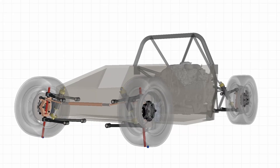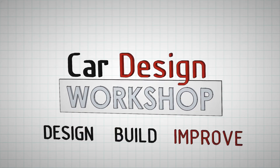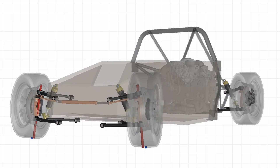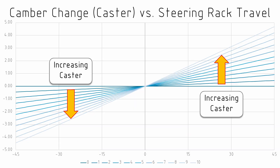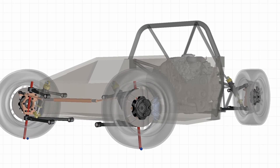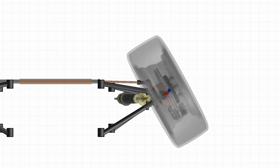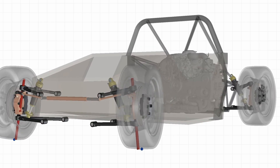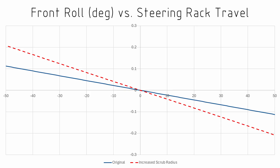G'day, I'm Dr Kev and this is Car Design Workshop. In this video we're going to be looking at the steering axis. This includes caster and KPI and how they affect the camber change throughout steering. We'll look at mechanical trail and scrub radius and how that affects how the contact patch moves under steering. And we'll see the combination of the angle of the steering axis and the trails inducing jacking in the suspension system.